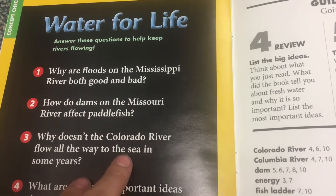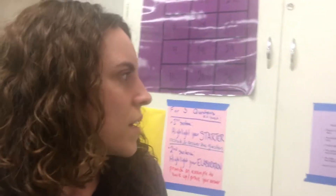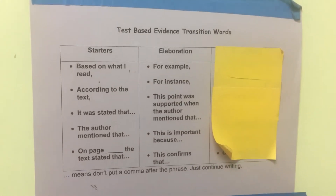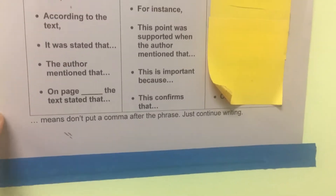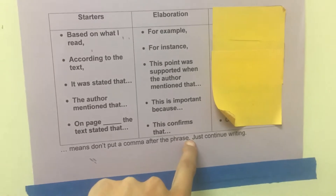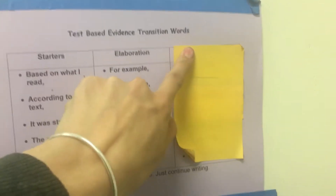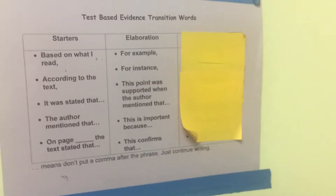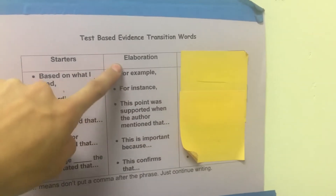So here it says 'Water for Life' and they have different questions. This first one says, 'Why are floods on the Mississippi River both good and bad?' What my students are able to do is use these two papers behind them — they have this one in their notebook as well. It lists text-based evidence transition words: 'Based on what I read,' 'According to the text,' 'It was stated that,' 'The author mentioned that,' 'On page blank, the text stated that.' The ellipses means don't put a comma after the phrase — just continue writing. There are also second-sentence starters like 'For example,' 'For instance,' and so forth.